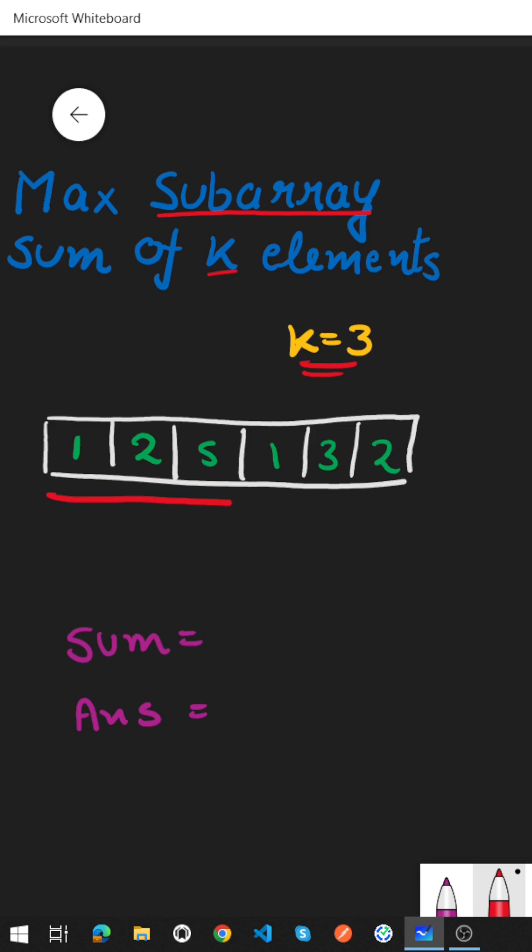We will maintain a window of length 3 and then we will compute the sum inside that particular window. In this case the sum will be 2 plus 5 plus 1 that is 8. Side by side we will also update our answer to get the maximum sum.